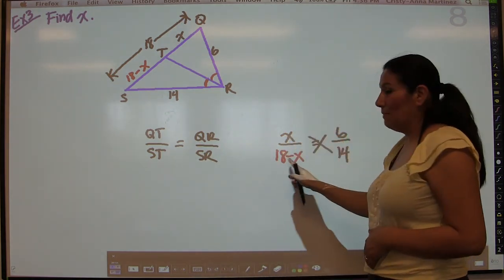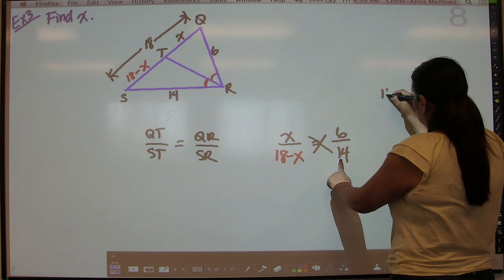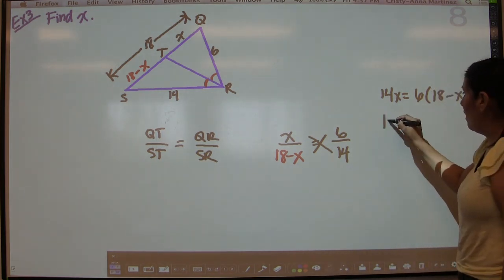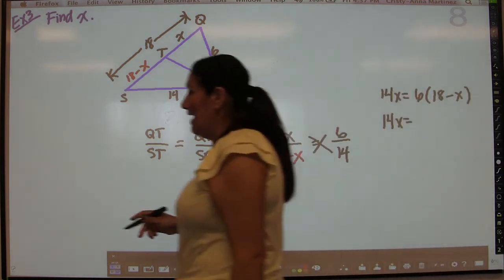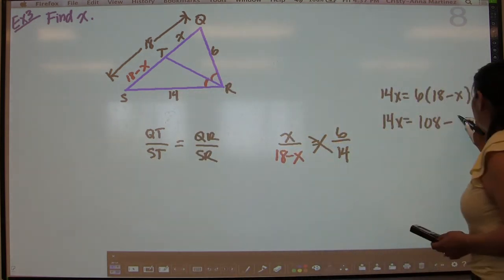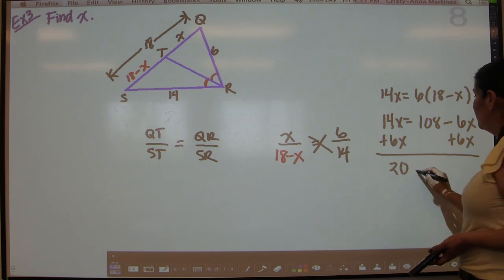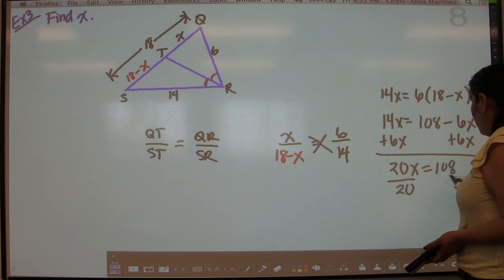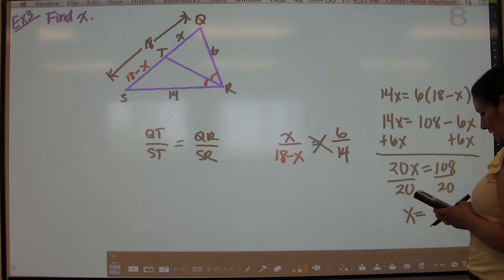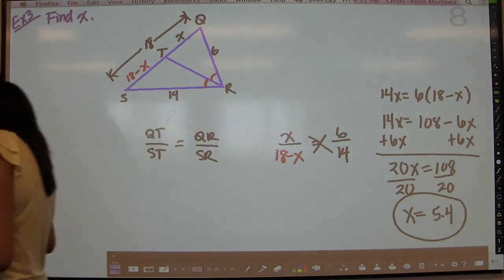Be careful with a binomial in the proportion — don't forget to distribute. Cross-multiplying: 14X equals 6 times (18 minus X), which is 108 minus 6X. Adding 6X to both sides gives 20X equals 108. Dividing by 20, X equals 5.4.